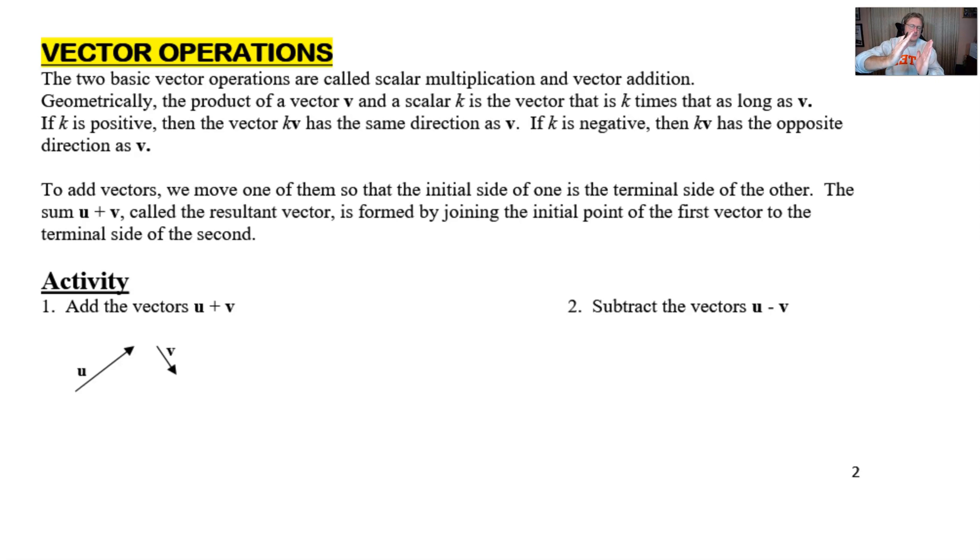You're just going to take this vector that's got such a length and multiply that by some value, and it's going to make the vector that many times longer. Now if k is positive, then the vector kv has the same direction as v. But if k is negative, that does tend to flip things around 180 degrees, and therefore you would have an opposite direction.